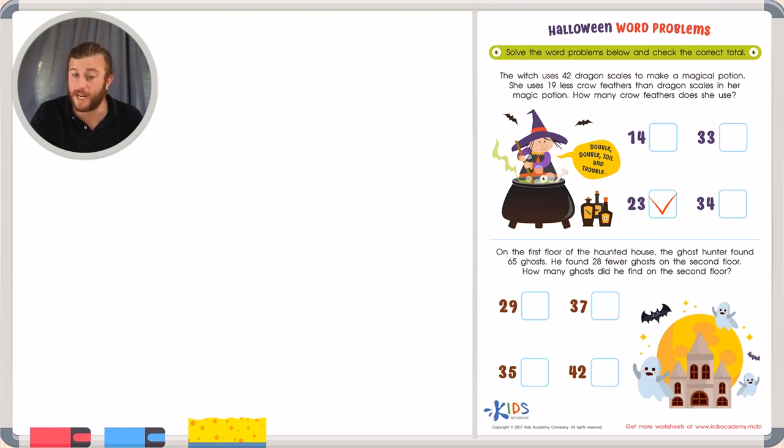Let's take a look at our second word problem. Again, underlining the important facts and details. On the first floor of a haunted house, the ghost hunter found 65 ghosts. He found 28 fewer ghosts on the second floor. How many ghosts did he find on the second floor?